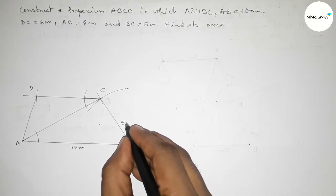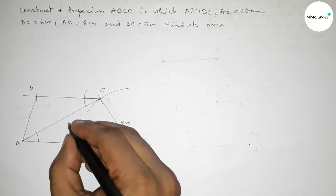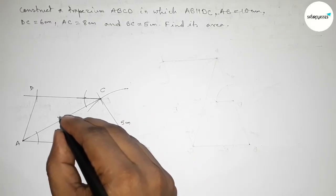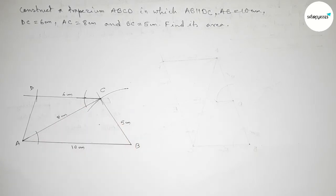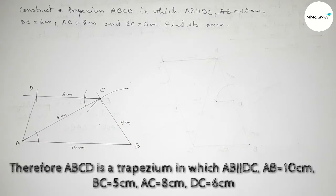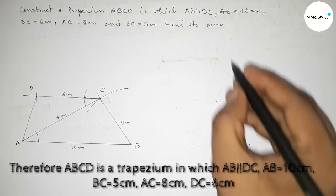So AB equal to 10 centimeter, BC equal to 5 centimeter, AC equal to 8 centimeter, and DC equal to 6 centimeter. Therefore ABCD is a trapezium with the given sides AB equal to 10 centimeter, BC equal to 5 centimeter, AC equal to 8 centimeter, and DC equal to 6 centimeter.